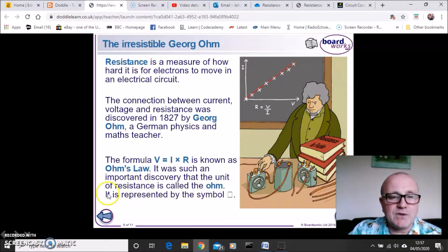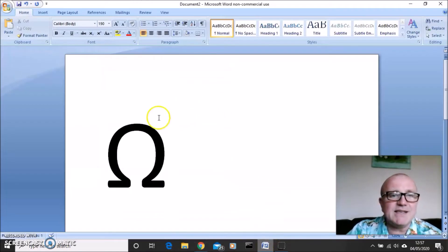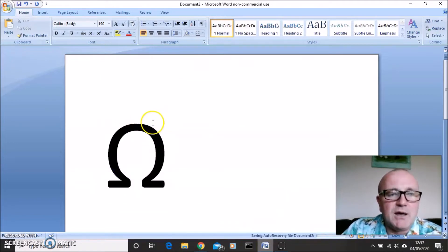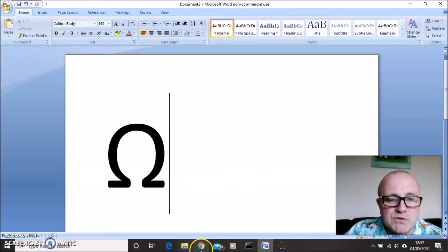Now you will notice that it's represented by this symbol. It's not represented by a square. For some reason on my little powerpoint here it won't display the symbol that we use. So what you should see is that we use the Greek letter omega as the units of ohms.